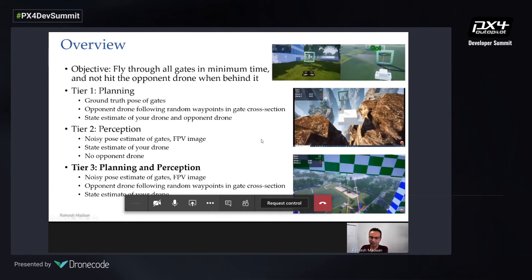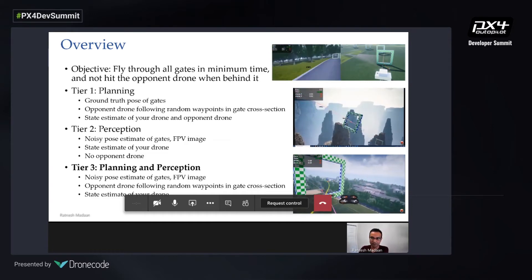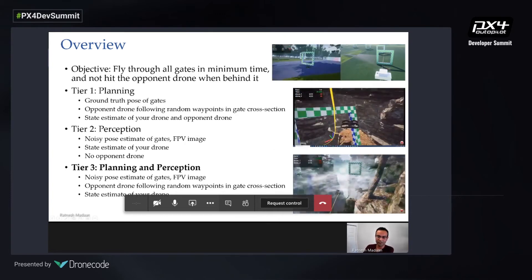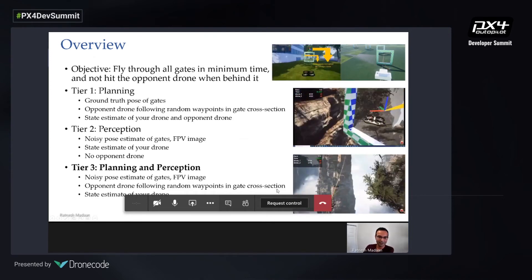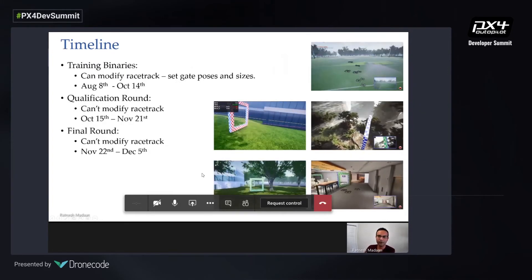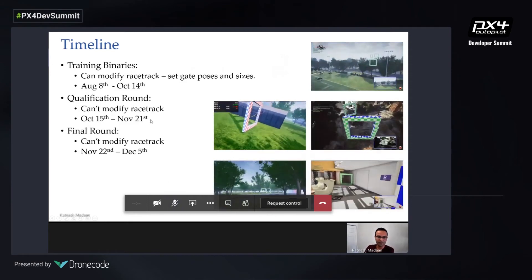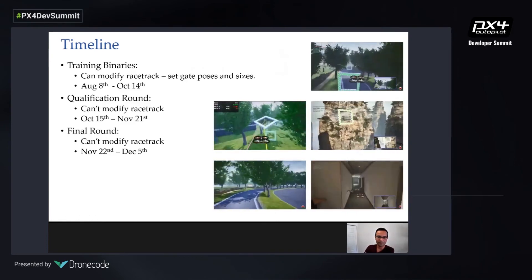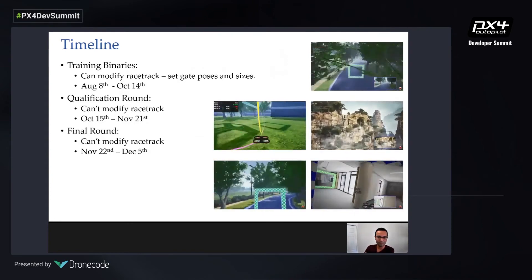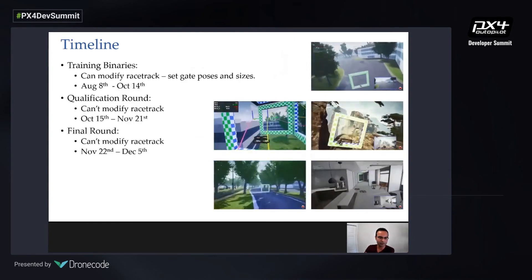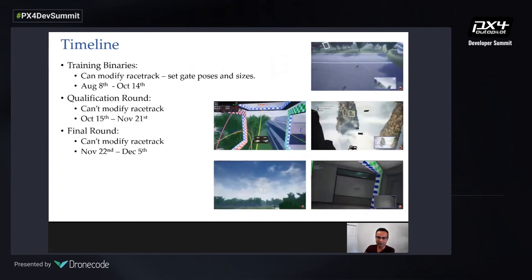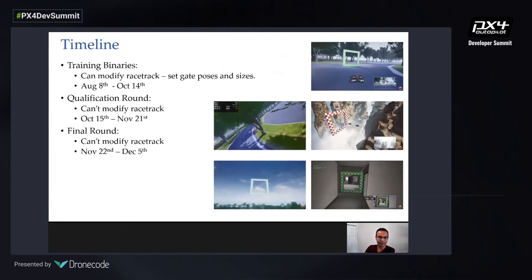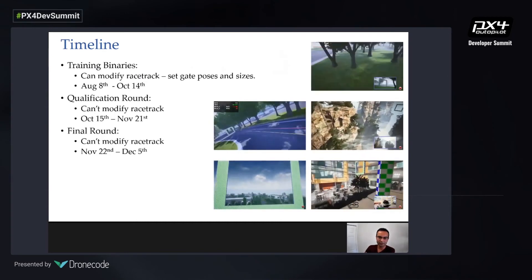Tier 3 combines both: noisy gate poses and an opponent drone. I'm showing a couple of race environments from our competition to give a feel for what they look like. In terms of logistics, we ran the competition in three phases: a training phase of about nine weeks, a qualification round of five weeks, and then a final round. We saw enthusiasm from academia, industry labs, and startups worldwide. In the training round, teams were allowed to modify race tracks however they wanted, but that wasn't allowed in the last two rounds.